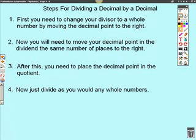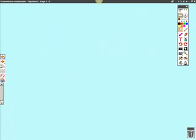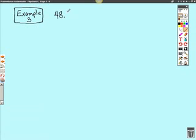Alright, let's go try a couple of examples of dividing a decimal number by a decimal number. Let's start out with, and we're going to call this example number 3.